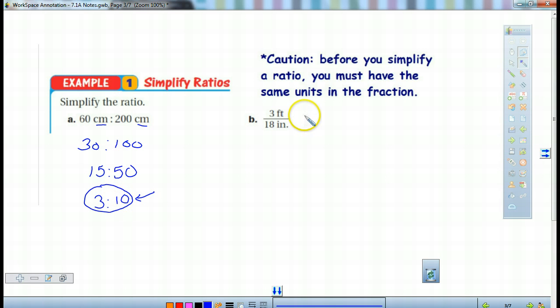I've got 3 feet to 18 inches. We've got to change these both into inches. So how many inches are in a foot? There are 12 inches in a foot. So I'm going to take 3 times 12 and I get 36 inches over 18 inches, which when I reduce this, I actually get 2 to 1. If I divide them both by 18, I get 2 to 1. So I'm going to leave it just like that where I've got it 2/1.